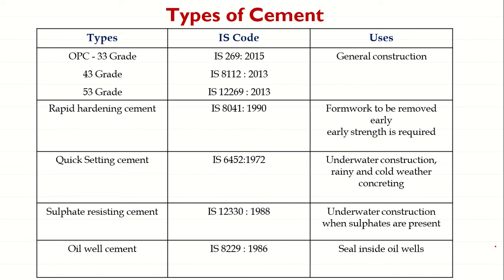The next type is Oil Well Cement. The IS code for this is IS 8229:1986. Oil well cement is used to seal oil wells from inside to prevent leakage of oil from the well into the ground.